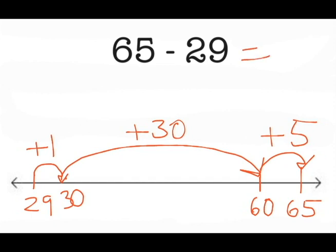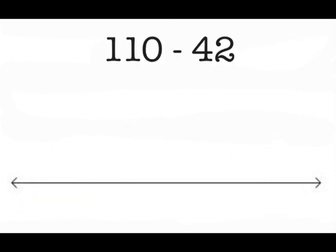So my total difference or distance on the number line is 30 plus 1 plus 5 for a difference of 36.